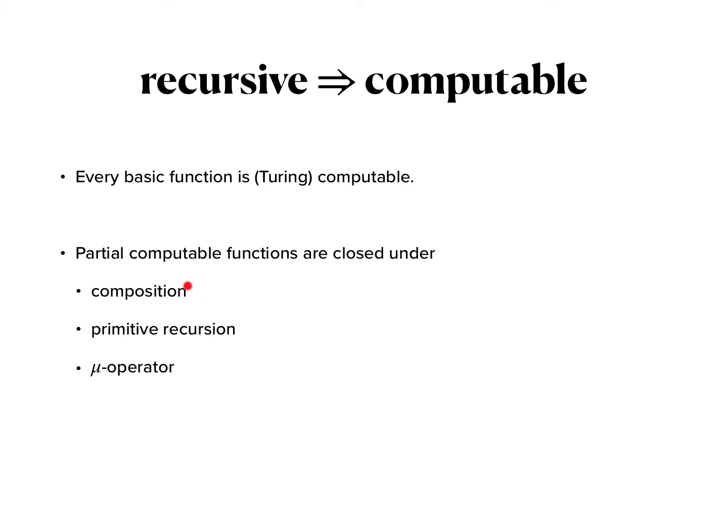And here you essentially just give a Turing machine that performs these operations given Turing machines for the functions that you want to compose and so on. There's nothing really special about Turing machines here—you can do similar, sometimes even easier proofs using other frameworks such as the register machines we looked at.